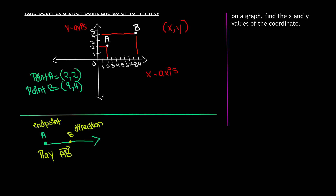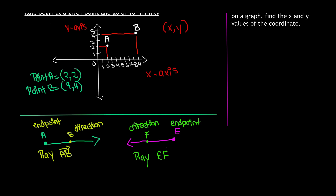Now let's say we have another example. Our given point in this case is going to be E, and this ray is going to go on for infinity, and in between we have point F. So the given point is going to be our end point, and the point that comes in between — or in the direction the ray is headed — is called the direction. When we write this, we write ray, then the end point E, then the direction F. And remember, even though this ray is headed to the left, we still put a ray on top headed to the right — because that is the rule of mathematics.